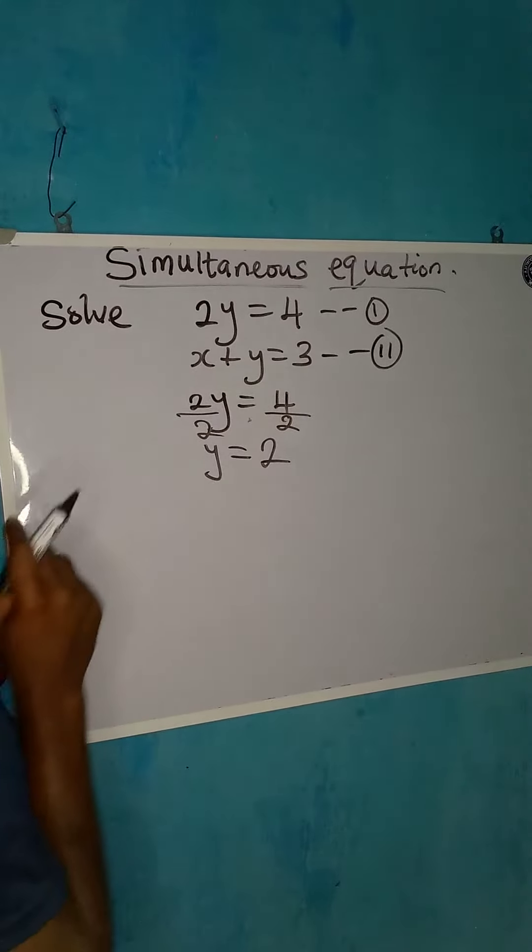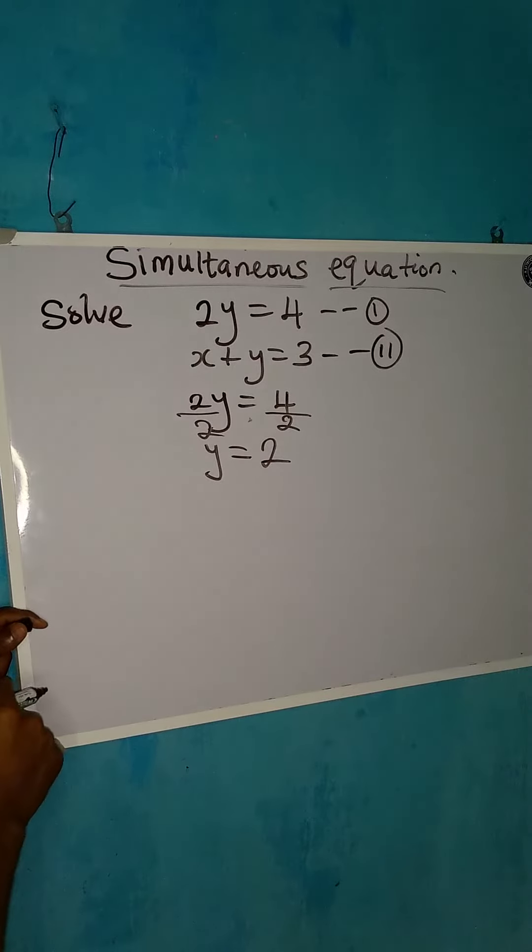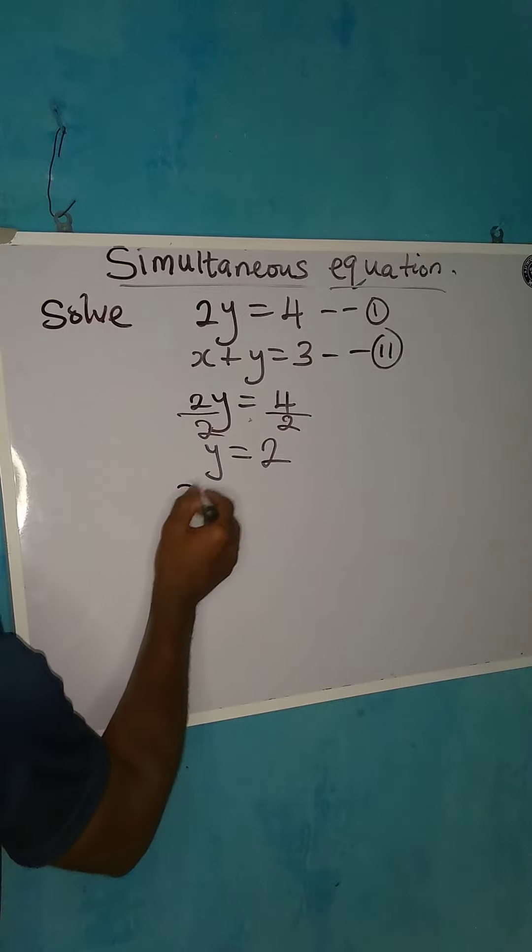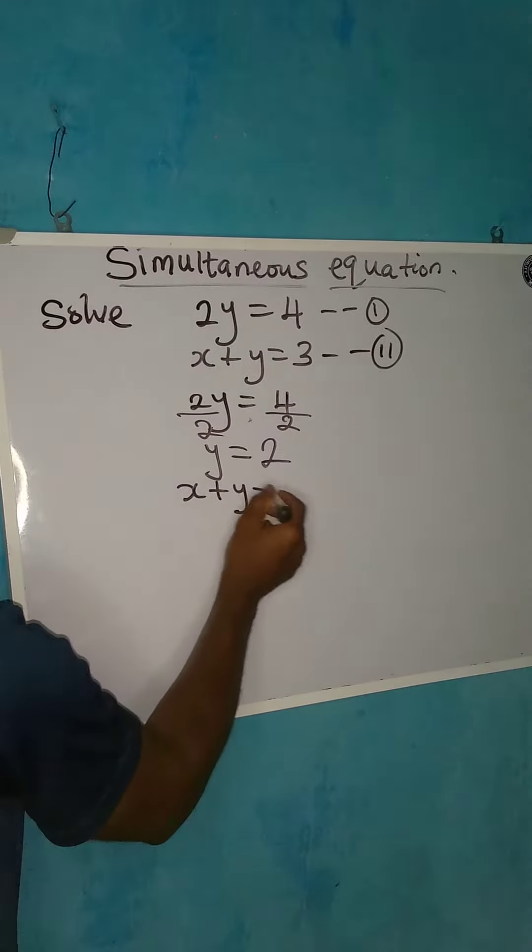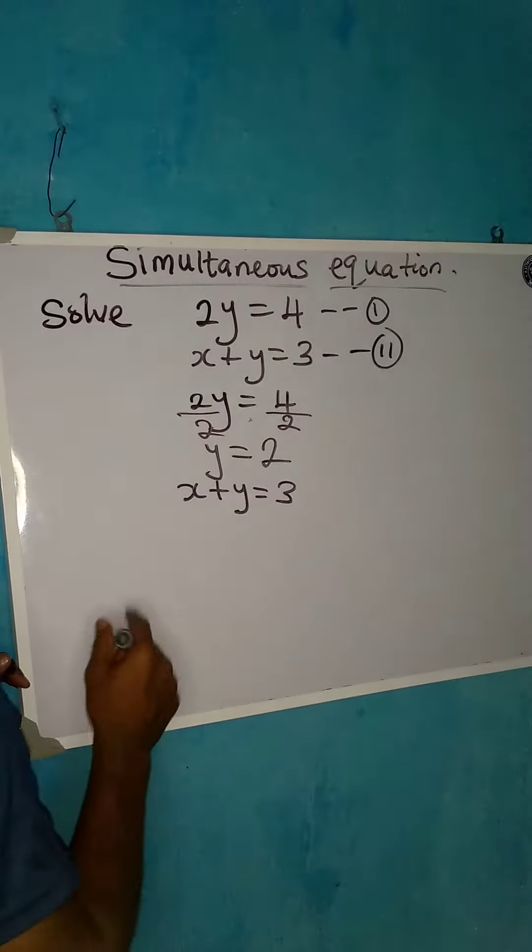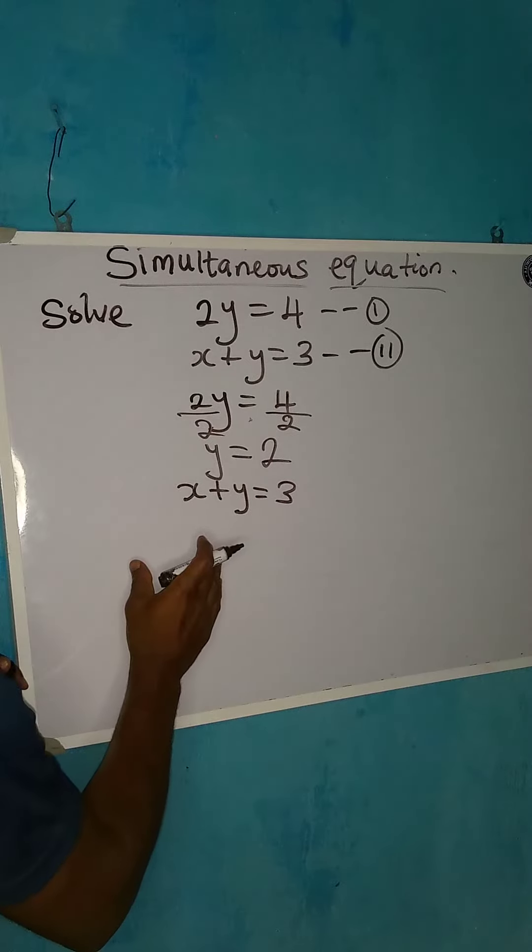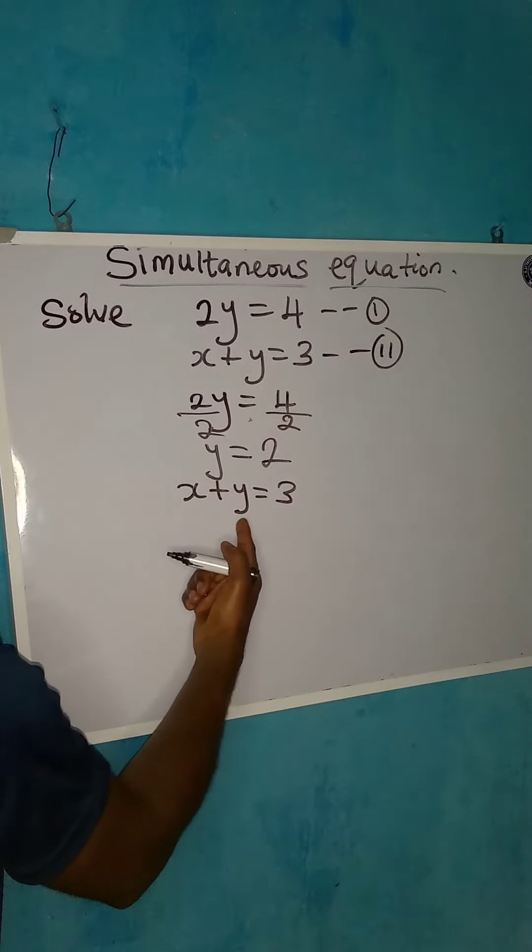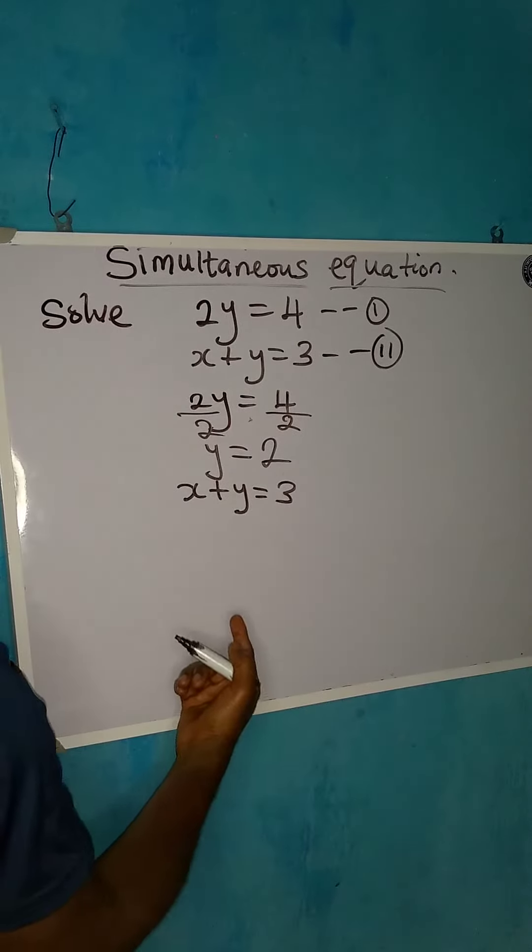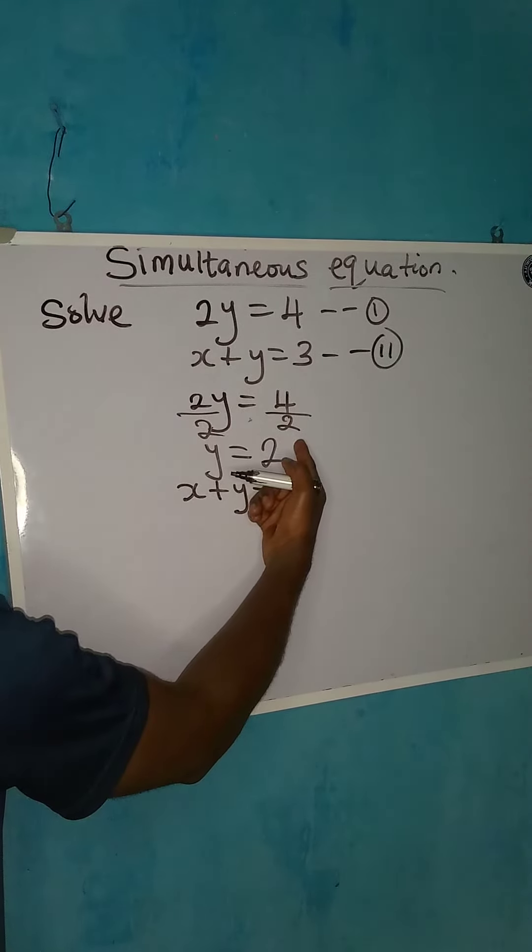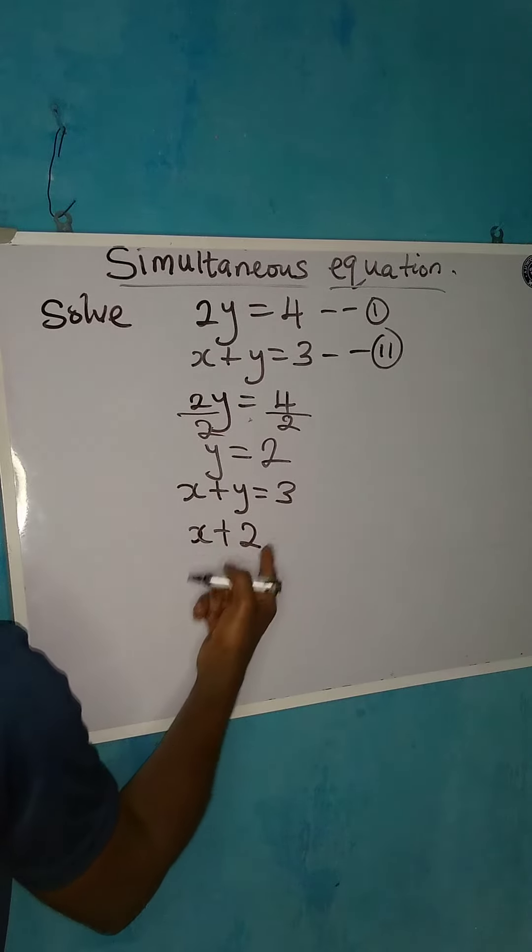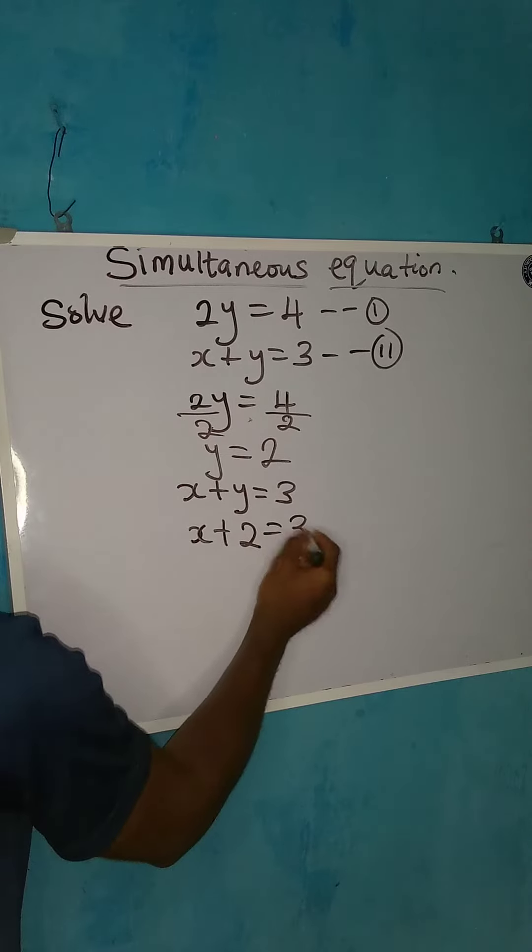The value of y is known from equation 1. Now we are going to move down to equation 2. Equation 2 is x plus y equal to 3, and we have to look for the value of x now because we've known the value of y. So where we have y, we are going to substitute 2. So x plus 2, in place of y I'm writing 2, is equal to 3.